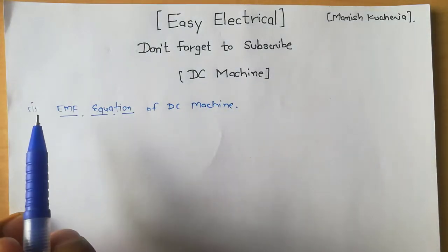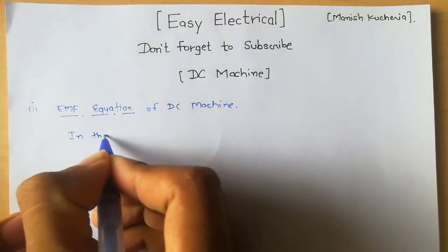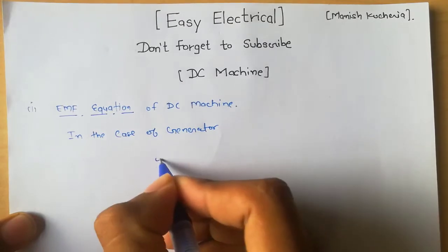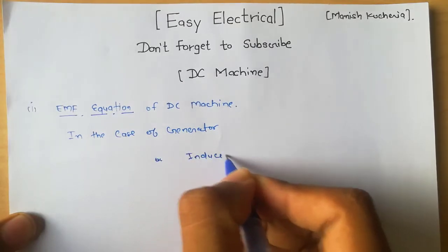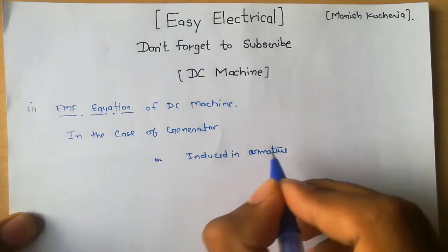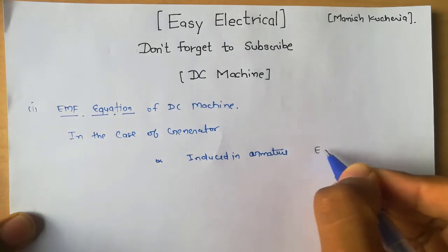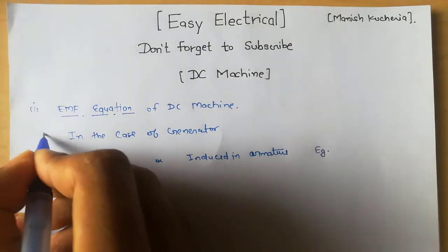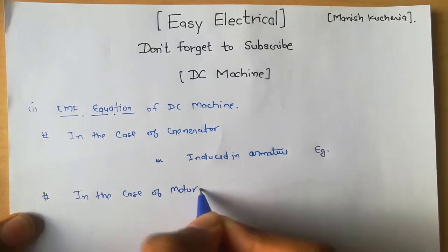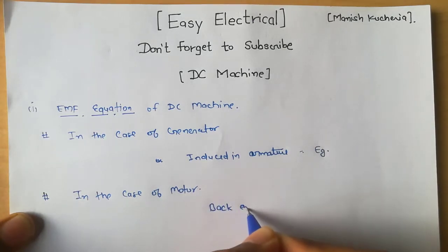We consider the electromotive force equation in the DC machine. In the case of a generator, we have an induced EMF in the armature, which is called the generated EMF, denoted by Eg — the generated voltage in the armature section. In the case of a motor, the induced EMF in the armature is denoted by Eb — back EMF.